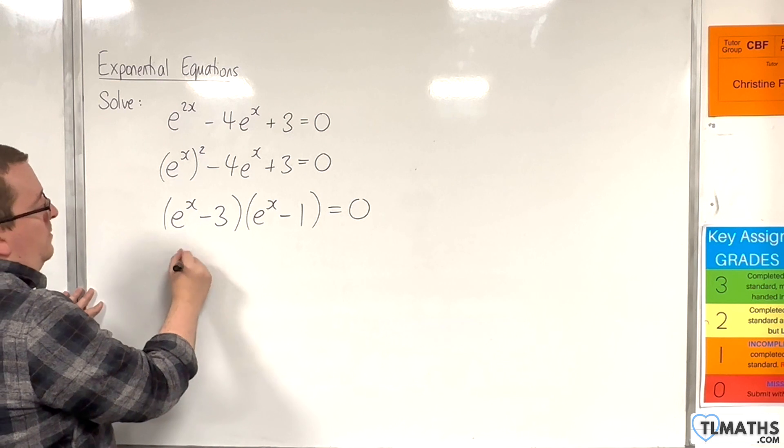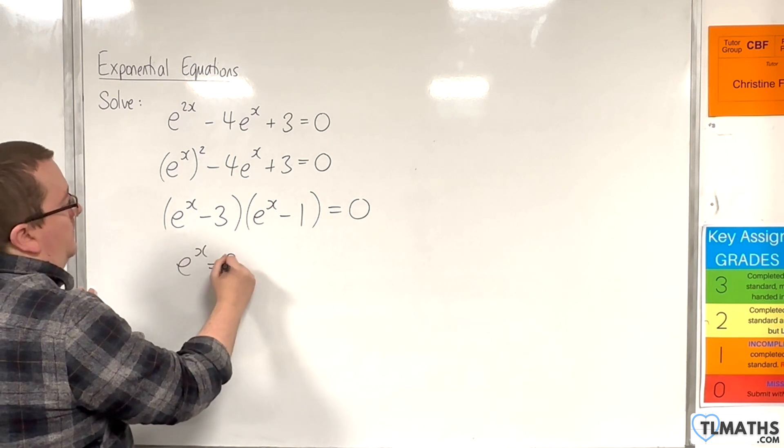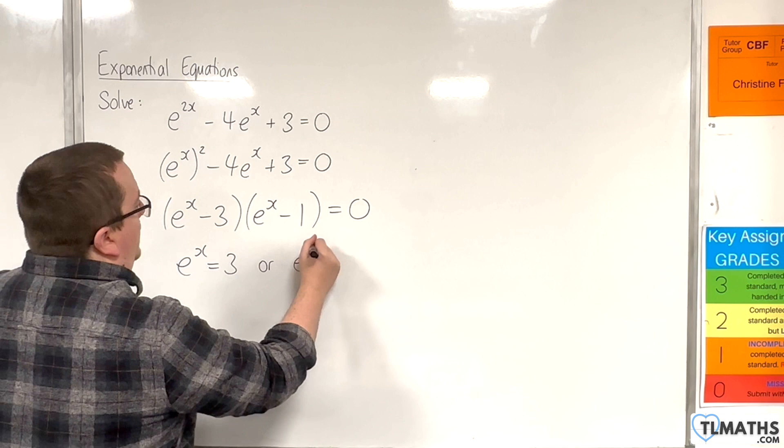So for this bracket to be 0, e to the x would have to be 3. And for this bracket to be 0, e to the x would have to be 1.